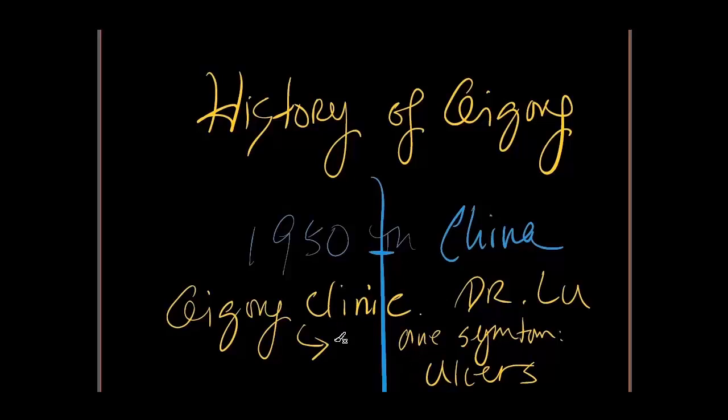He found that by having patients with very difficult cases of ulcer go to his Qi Gong clinic for a stay of one month to three months, by practicing a form of stillness Qi Gong meditation where they practice a certain kind of breathing regimen and breathing control and also a special meditation, incredible healing occurred.